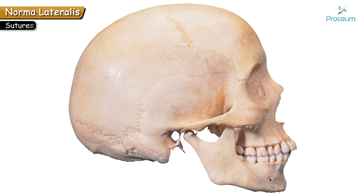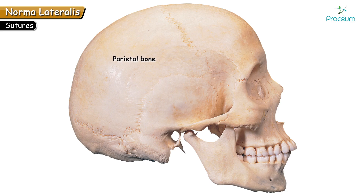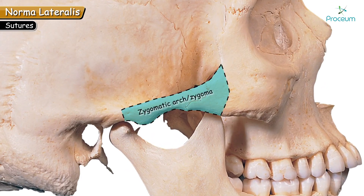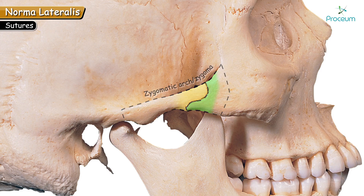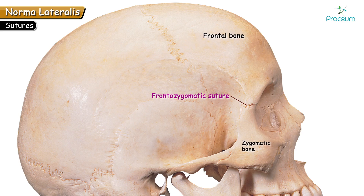Let's continue with the sutures joining these bones. The suture joining the frontal and parietal is the coronal suture. The suture at the junction of the parietal and occipital is the lambdoid suture. The most prominent arch present in this view is the zygomatic arch, also known as the zygoma. It is formed by the fusion of the zygomatic process of the temporal bone and the temporal process of the zygomatic bone. The frontozygomatic suture is well appreciated along the lateral margins of the orbit.